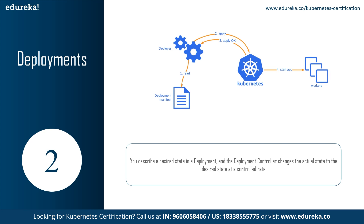Speaking about Deployments, a Deployment provides declarative updates for pods and ReplicaSets. You describe a desired state in a Deployment and the Deployment controller changes the actual state to the desired state at a controlled rate. You can define a Deployment to create a new ReplicaSet or to remove an existing Deployment and adopt all the resources with the new Deployment.